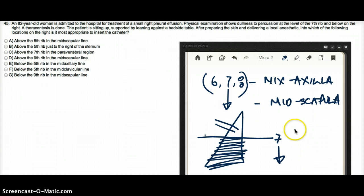So from the options, we can already rule out A, B, C, D is there, E, F, and G. A, B is gone, and E, F is gone. Because it says the patient is sitting up, supported by the bedside table. Dullness to percussion at the level of the 7th rib and below.